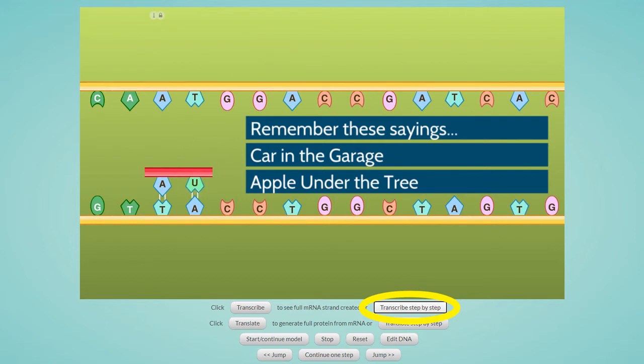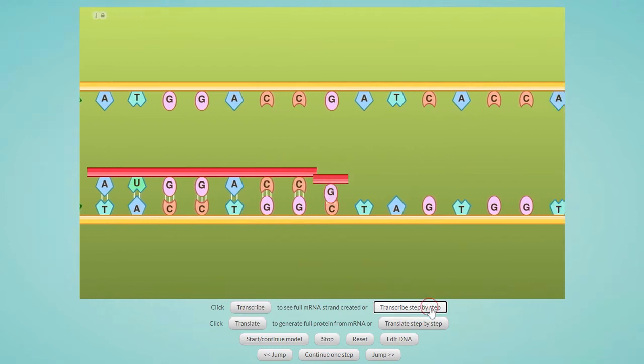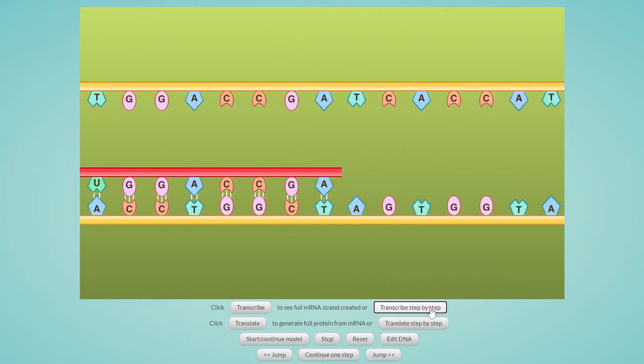Continuing to click on this button will bring in the nitrogen bases one at a time. C with G, C with G, T with A, G C, G C, C G, T A, A U.